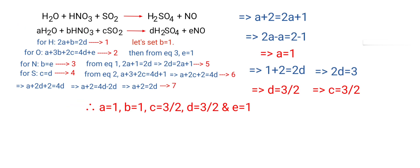Now you can apply A, B, C, D and E values in the above equation. Then H2O plus HNO3 plus 3 by 2 SO2 gives us 3 by 2 H2SO4 plus NO. In this equation 3 by 2 is a rational number. We don't use rational numbers for a chemical equation.